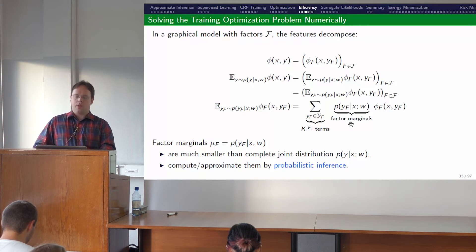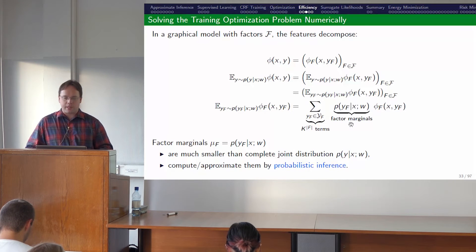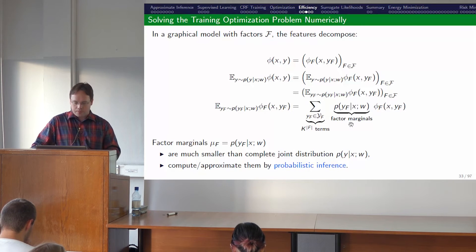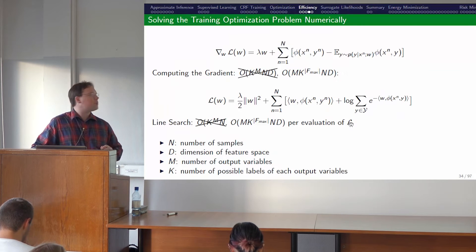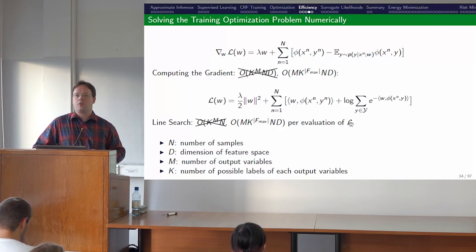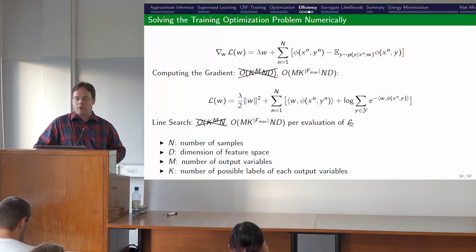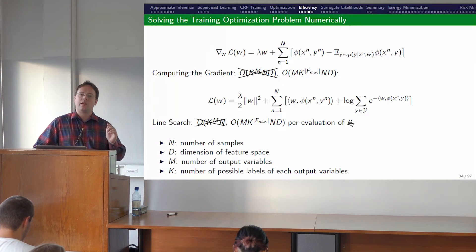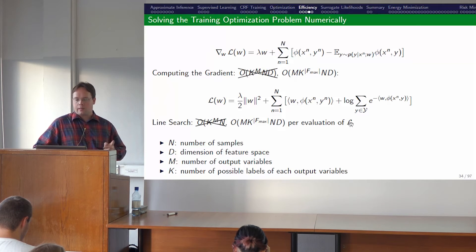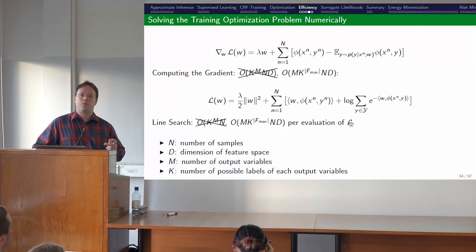Knowing about probabilistic inference actually pays off. It allows us to take this exponential dependence — number of states to the power of number of variables — and break it down to only the number of factors or the size of the largest factor. If you have a pairwise model, it's now number of states squared, where before it might have been number of states to a million. That makes a big difference.